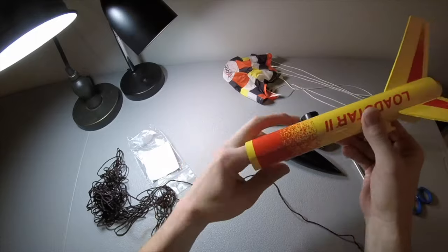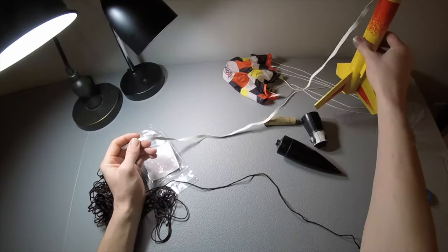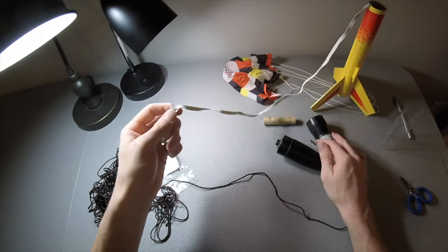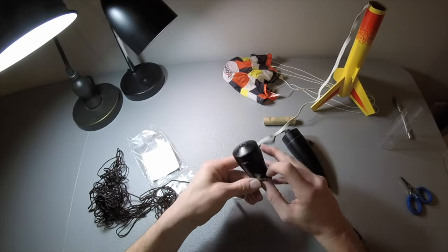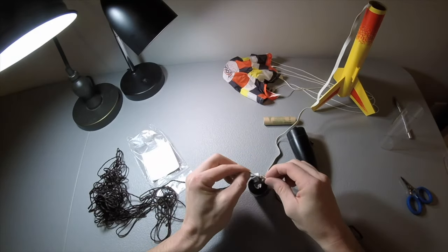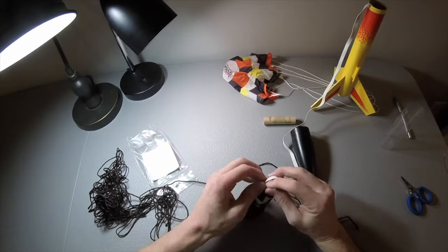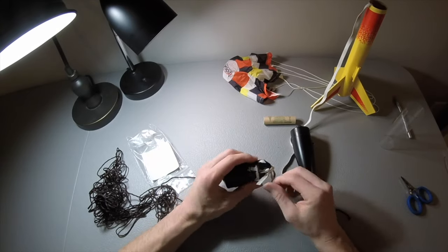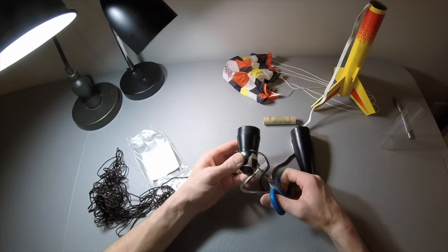Okay, there's the shock cord. Looks like I'm gonna go ahead and attach the shock cord to the payload coupler. Just a regular overhand knot. Nothing too fancy. And cut off the excess so it doesn't get tangled with the parachute.